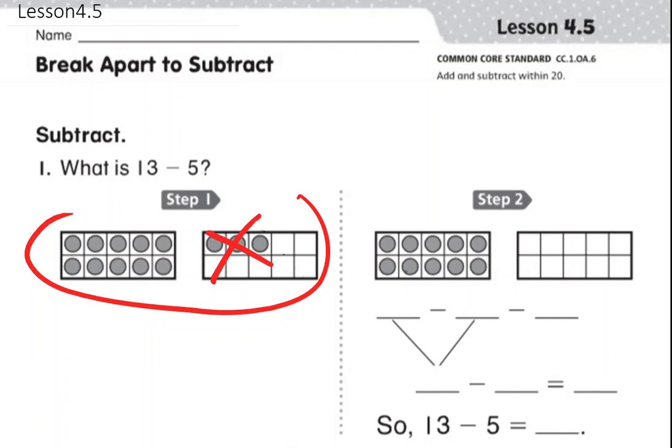Look at step 2. Once you take 3 away in step 2, we have 10 left. So we started off with 13. We took away 3 to make a 10. 13 minus 3 equals 10.